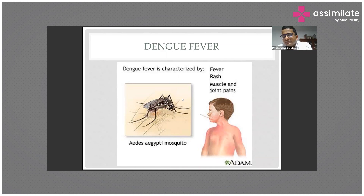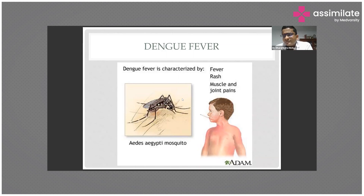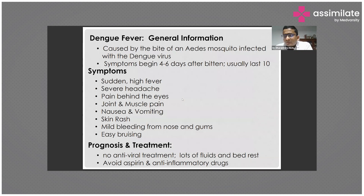There are different phases of illness: simple dengue fever, dengue shock syndrome, and dengue hemorrhagic fever. The spectrum is threefold — simple dengue fever, dengue shock syndrome, and dengue hemorrhagic fever.